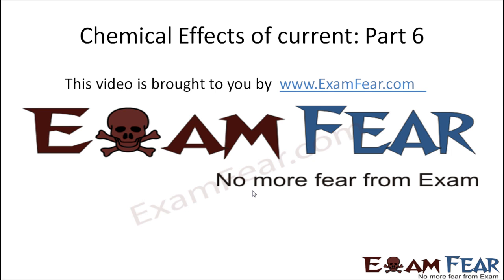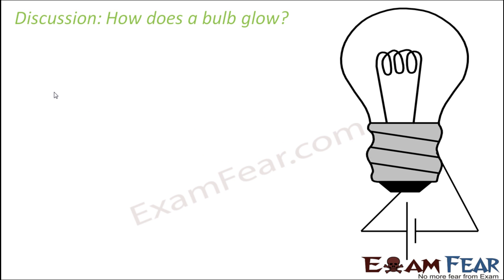Hello friends, this video on chemical effects of current part 6 is brought to you by examfear.com. Now, till now we have been talking only about the simple circuit of a bulb glowing when you switch it on. We saw that the bulb glows only when the circuit is complete and when the circuit elements allow current to flow through it.